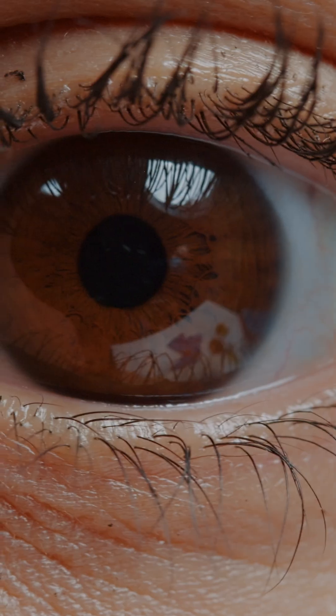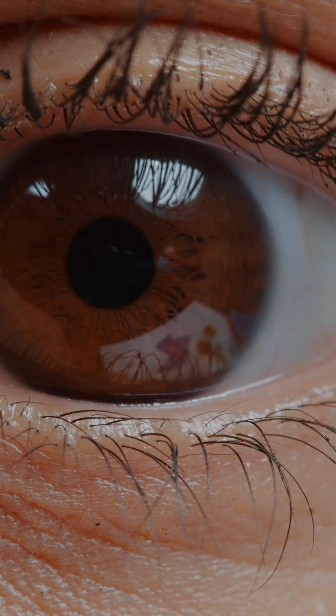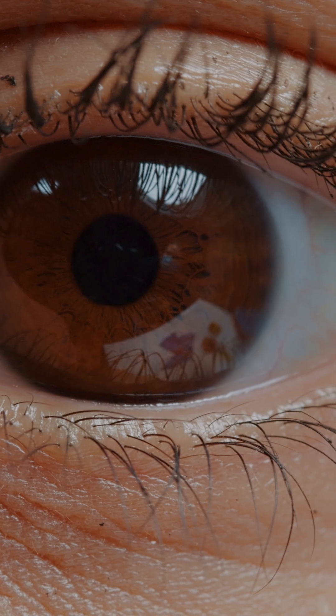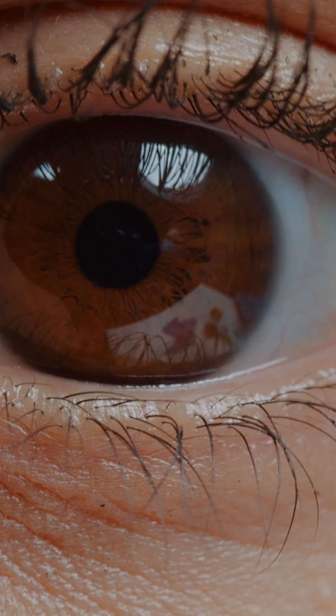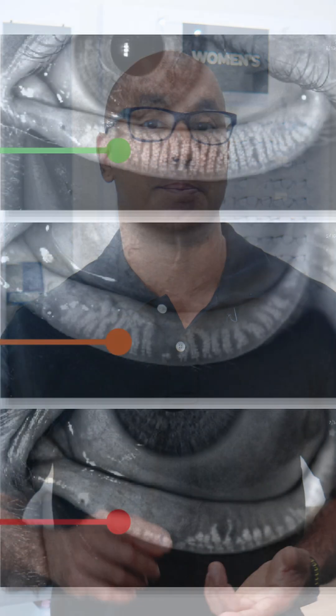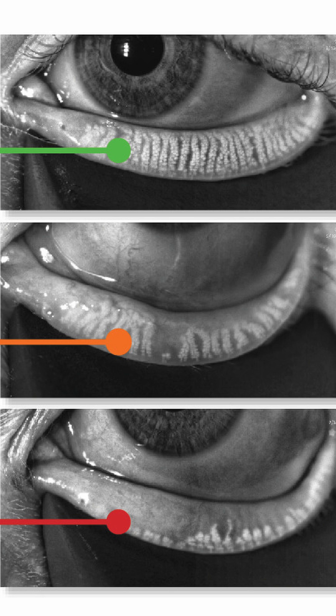One of those tests is meibography. What that does is look at the actual anatomy of your meibomian glands. These glands are what produce the oil layer of your tear film, and are the root cause of 85 to 90 percent of dry eye.